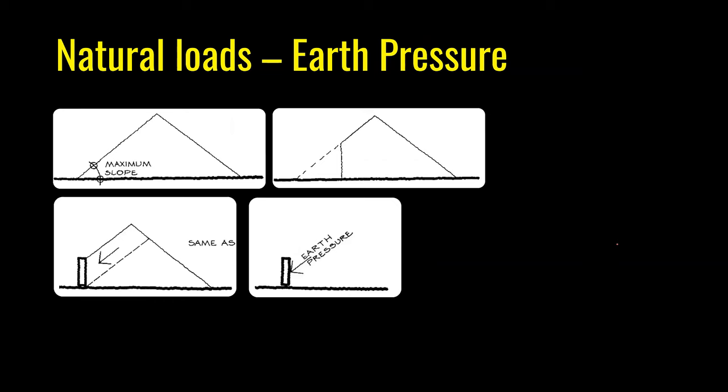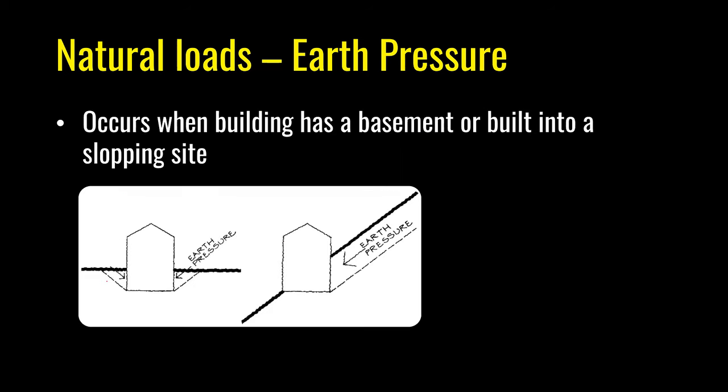If dry sand is piled up, there is a maximum slope for its sides. If a heap with a vertical side is required, a retaining wall is needed to keep it in that unnatural shape, as the sand wants to return to its original shape shown by dotted lines. The wall must hold back the sand above the dotted line.